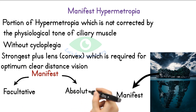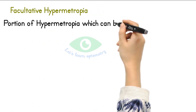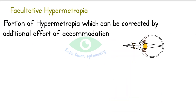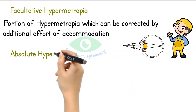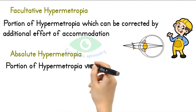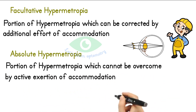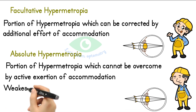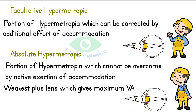Manifest hypermetropia is composed of two further components: facultative and absolute hypermetropia. Facultative hypermetropia is the portion which can be corrected by additional effort of accommodation. Absolute hypermetropia is the portion which cannot be overcome by active exertion of accommodation. The weakest plus lens which gives maximum visual acuity is the absolute hypermetropia.